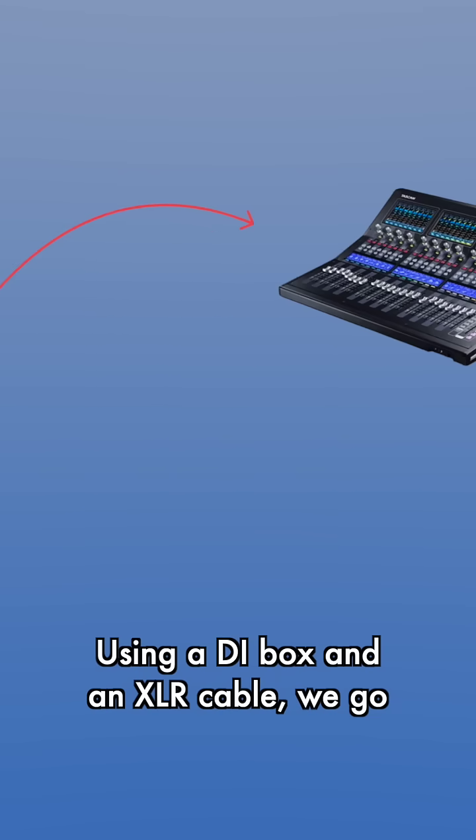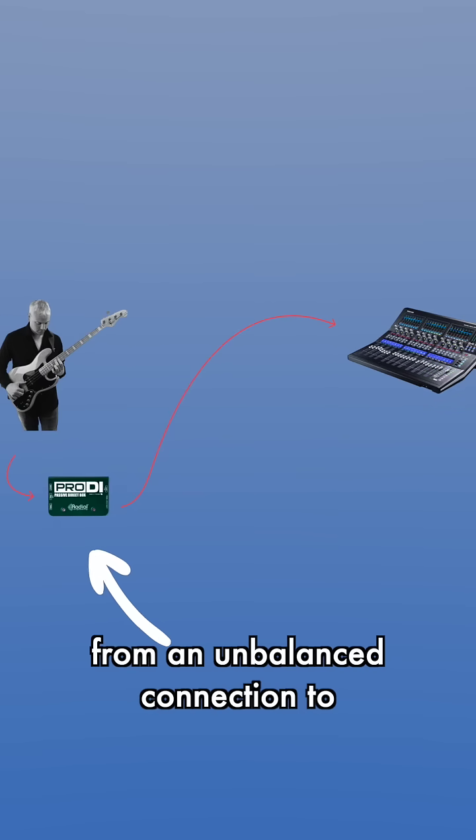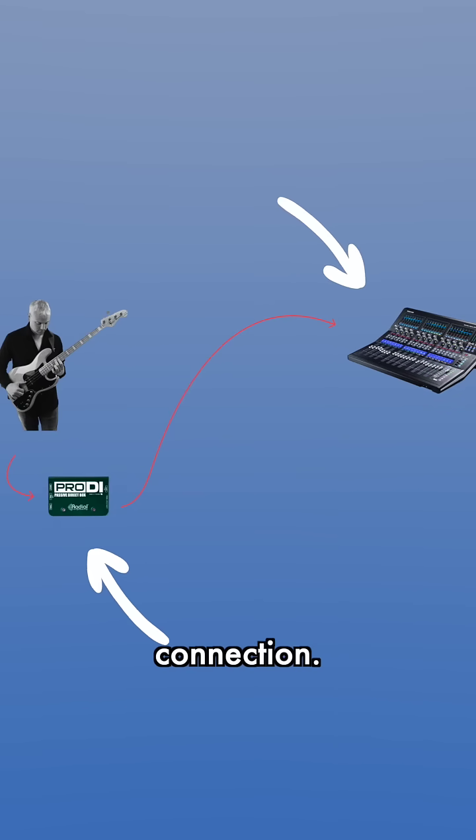Using a DI box and an XLR cable, we go from an unbalanced connection to a balanced connection.